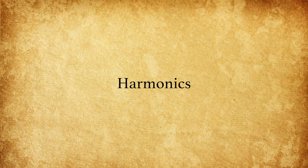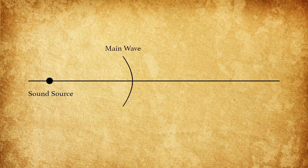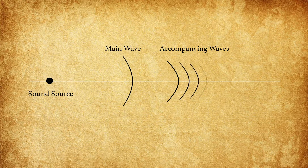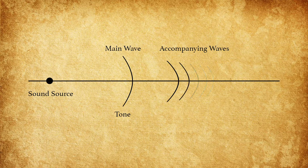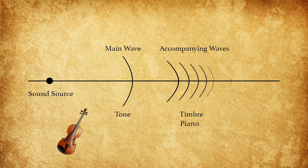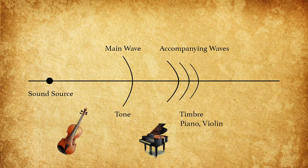In the language of sound, these waves are called harmonics. Every sound has a main wave and accompanying waves, which together we hear as one sound. The main wave — that's the lowest sounding wave — is heard as a musical tone. The rest of them give a timbre or character to the sound, by which we can identify the source: whether it's a violin, piano, drums, human voice, etc.